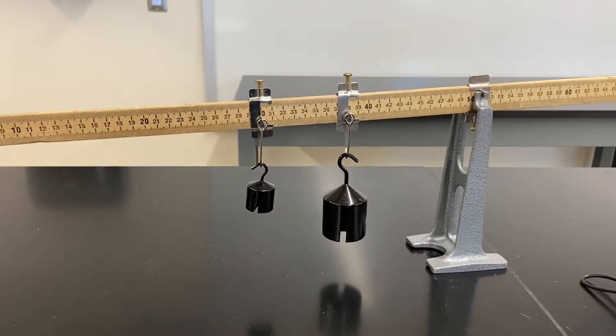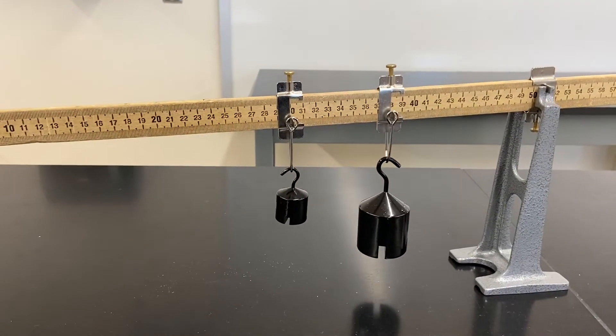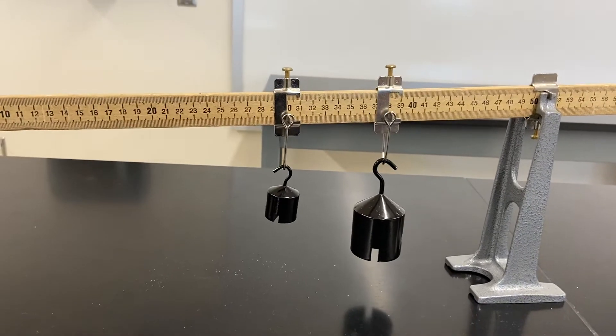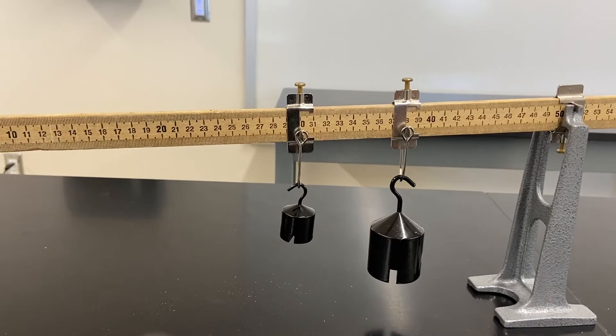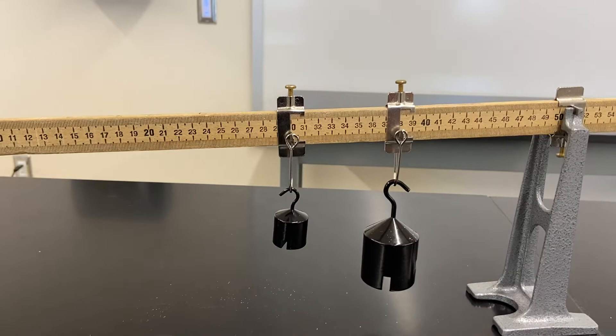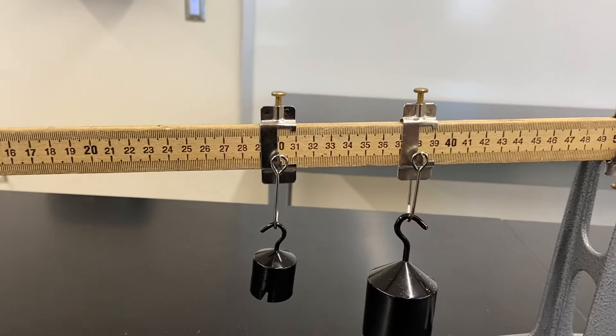Step three of our lab asks us to place a 100 gram mass and a 500 gram mass somewhere on the left hand side of the meter stick and then balance the meter stick with a 200 gram mass on the right.